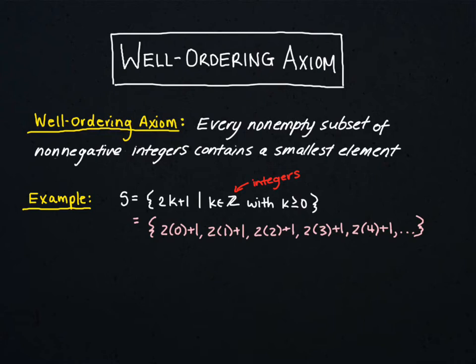So here, let's simplify. We've got 2 times 0 is 0 plus 1, so this first simplifies to 1. Then we get 3, 2 times 2 is 4 plus 1 is 5, 7, 9, and so on. So it looks like our set S here is actually the set of positive odd numbers.